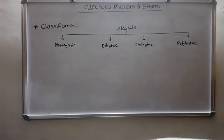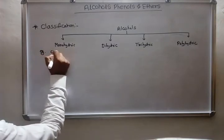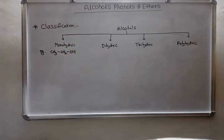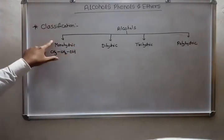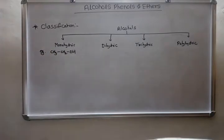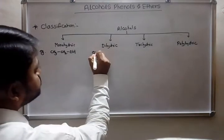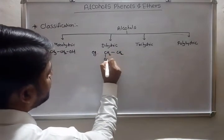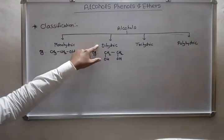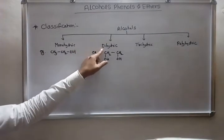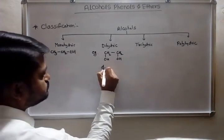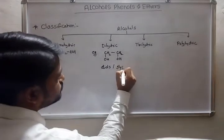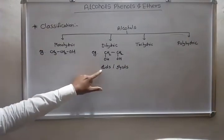Monohydric alcohols contain only one hydroxyl group in their molecule. Dihydric alcohols contain two hydroxyl groups situated on different carbon atoms. Dihydric alcohols are also known as diols or glycols.